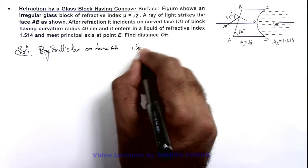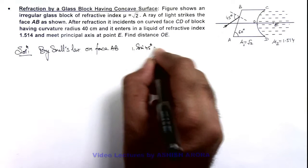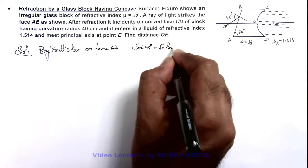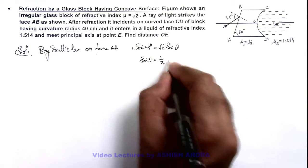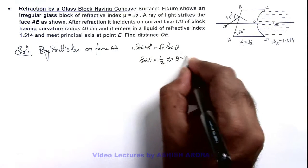1 multiplied by sine 45 degrees is equal to root 2 sine theta. So here the value of sine theta we are getting is 1 by 2. This implies the value of theta is 30 degrees.